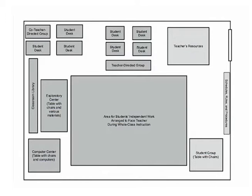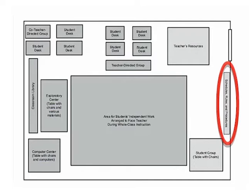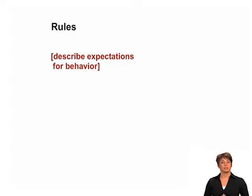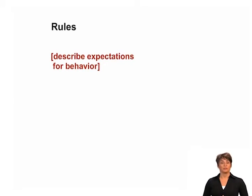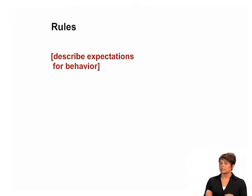Remember the classroom layout we reviewed at the beginning of this module? In it there was space dedicated to the display of rules and procedures. These rules and procedures should be prominently placed, introduced early in the year, and consistently reinforced. Rules and procedures are not the same thing. Classroom rules generally describe expectations for behavior — how students are expected to treat and interact with one another, the teacher, and the classroom materials. Rules are most effective when there are consequences for breaking them and rewards for following them, and both are consistently enforced.